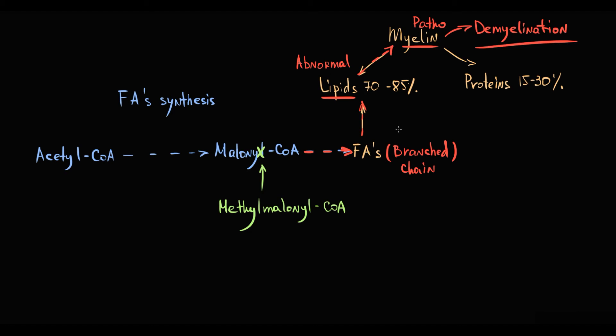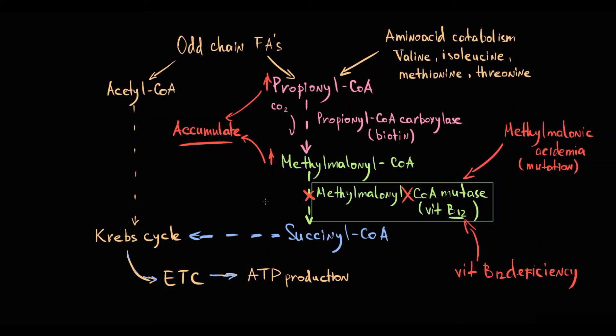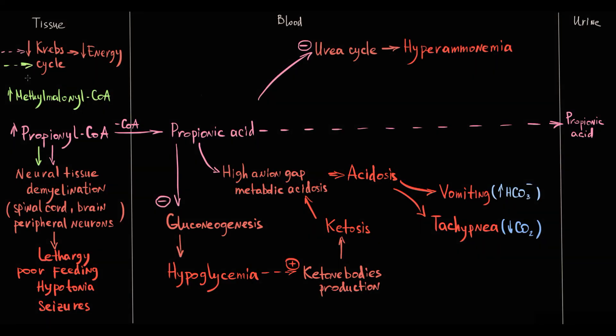In methylmalonic acidemia, both propionyl-CoA and methylmalonyl-CoA cause demyelination of the spinal cord, brain, and peripheral neurons. Damage to the neural system results in symptoms including lethargy, poor feeding, hypotonia, and seizures. Without methylmalonyl-CoA mutase, succinyl-CoA cannot be formed, so it will not enter the Krebs cycle — this decreases Krebs cycle activity and thereby decreases energy production, causing energy deficiency.